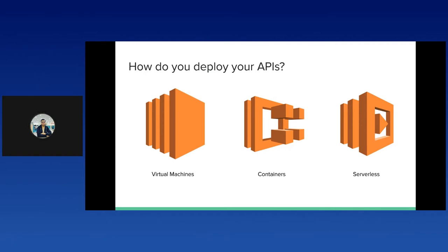Before we jump into the intricacies of serverless, let's discuss the standard ways we employ to deploy our APIs. If you want to get started the standard way, you can use AWS Elastic Compute Cloud to deploy your APIs. It provides a standard virtual machine instance which you can configure to run your APIs. You simply create an instance, do a secure shell login, and you're ready to configure everything for deployment.